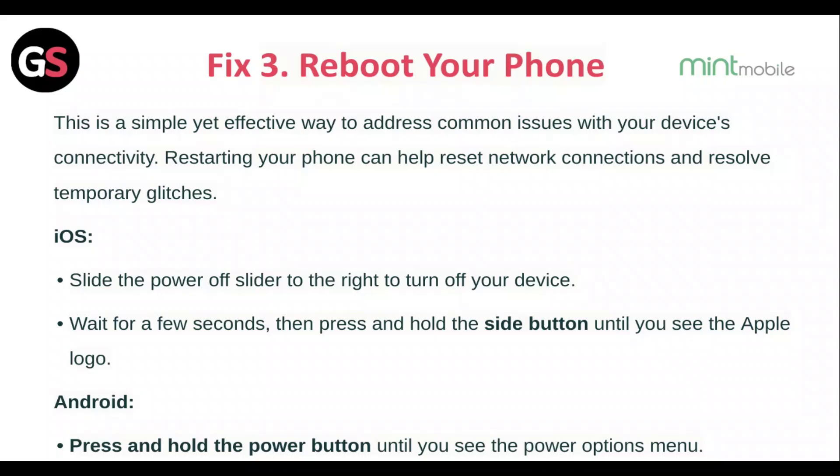Fix 3: Reboot your phone. This is a simple yet effective way to address common issues with your device's connectivity. Restarting your phone can help reset network connections and resolve temporary glitches. For iOS, slide the power-off slider to the right to turn off your device, wait a few seconds, then press and hold the side button until you see the Apple logo.